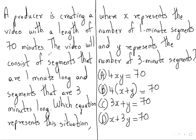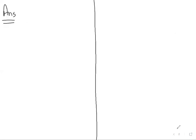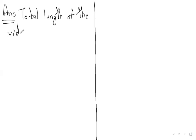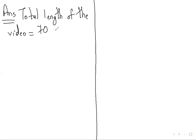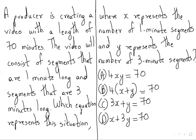So first we will write what is given to us. The producer is creating a video with the length of 70 minutes — so that is the total length. The total length of the video is equal to 70 minutes. The video consists of segments that are one minute long and segments that are three minutes long.